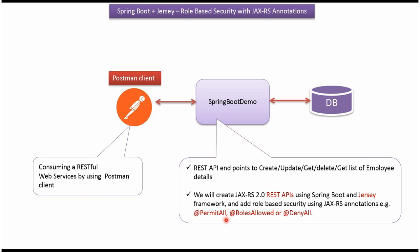Examples of JAXRS annotations are PermitAll, RolesAllowed, and DenyAll. Here you can see Postman client. Using Postman client we will consume the RESTful web services which are exposed by this Spring Boot demo application.